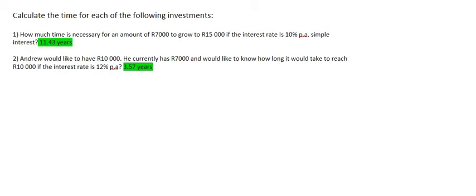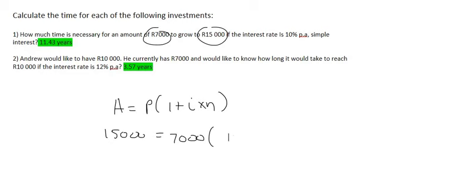Because it's simple interest, we can simply use the simple interest formula. We know that A means the final amount, which they've told us is 15,000 Rand. P is the starting amount, which is 7,000 Rand. The interest rate is 10%, which is the same as 0.1.